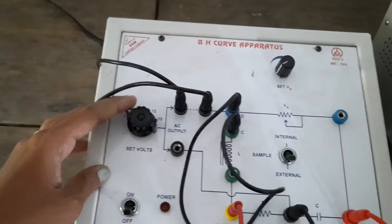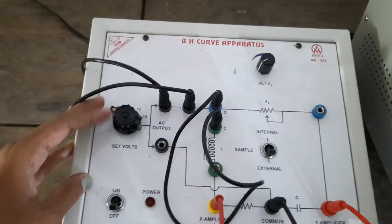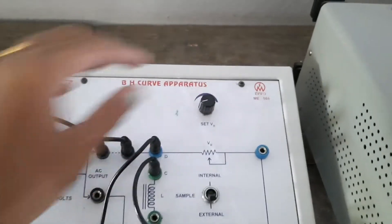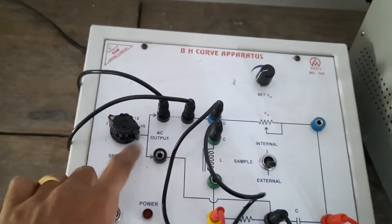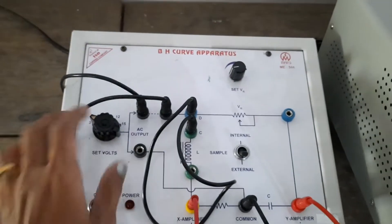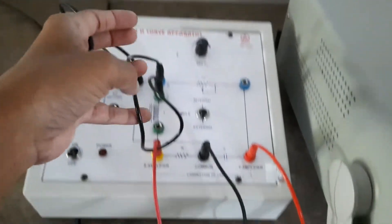Here we have voltage variation knob. And this is the variable voltage. Here we have 3 to 15 volt range. We can just vary to get the BH curve. And this is the connections we can see circuit diagram.